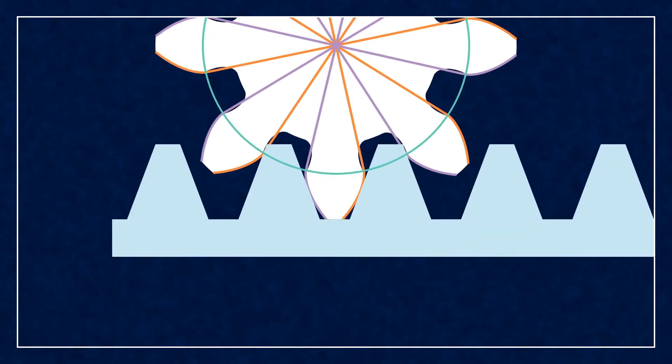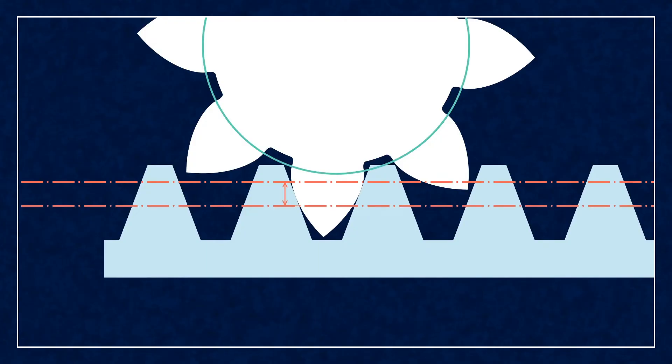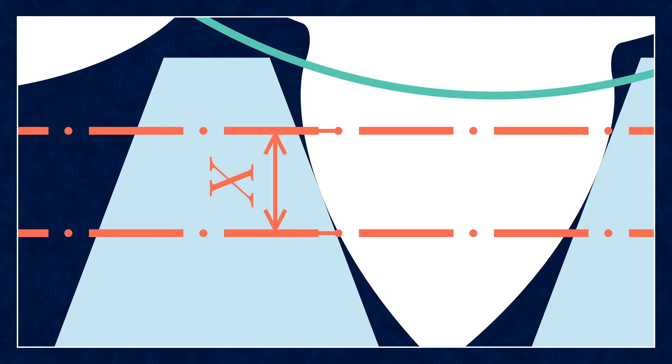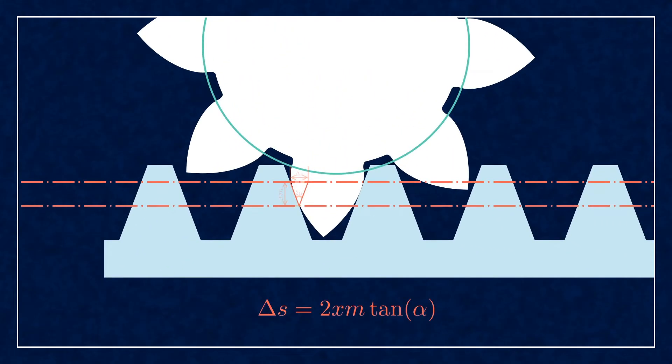Going back to the reference profile, let's do some math with the profile shift. The amount of profile shift shall be denoted by x. The uppercase X denotes the absolute amount of profile shift, and lowercase x is the profile shift coefficient, making it proportional to the module. Now consider this triangle. The angle opposite of delta s is 2 times alpha, so we can calculate this delta s value as follows. This is the amount the rack shifted to the right in this configuration.